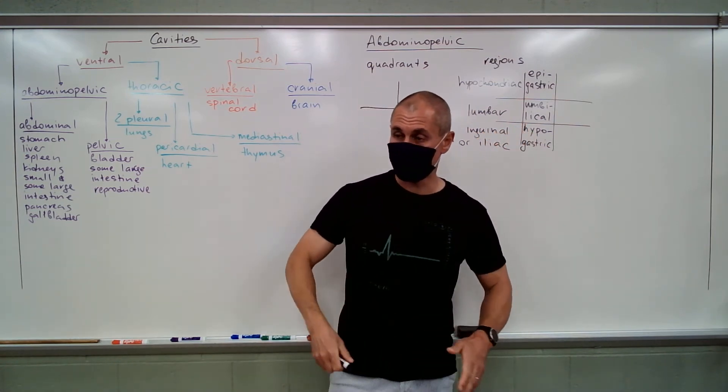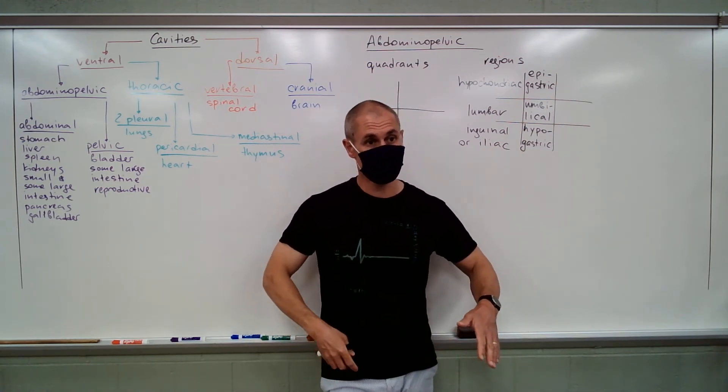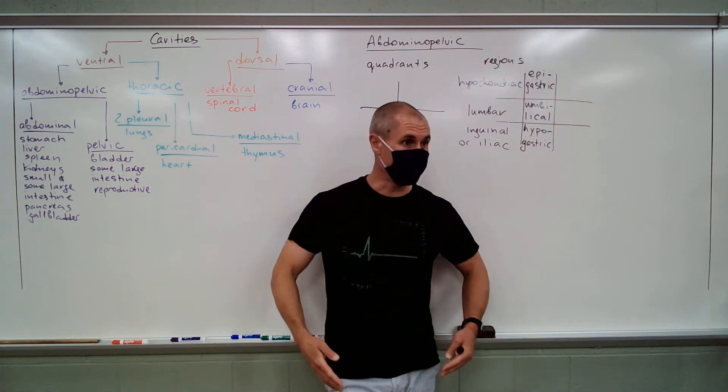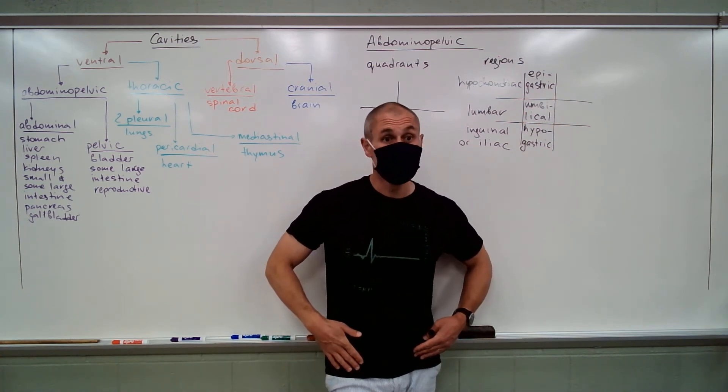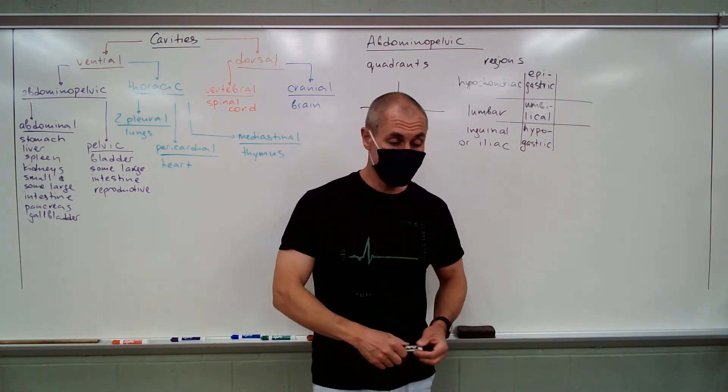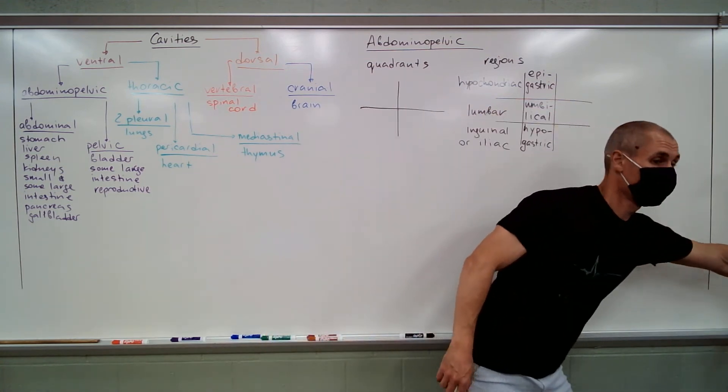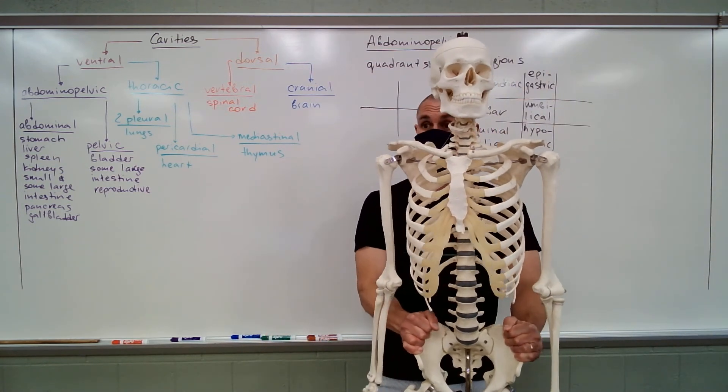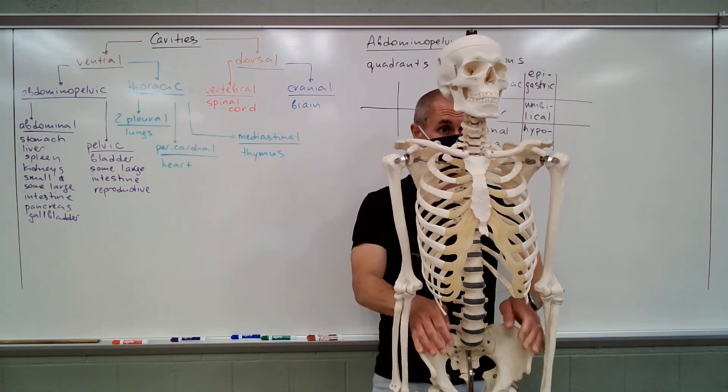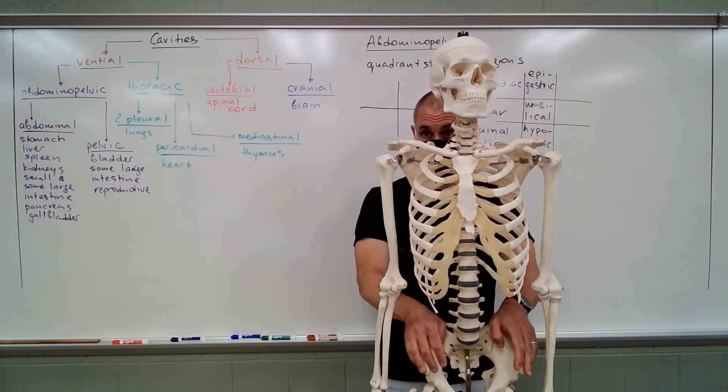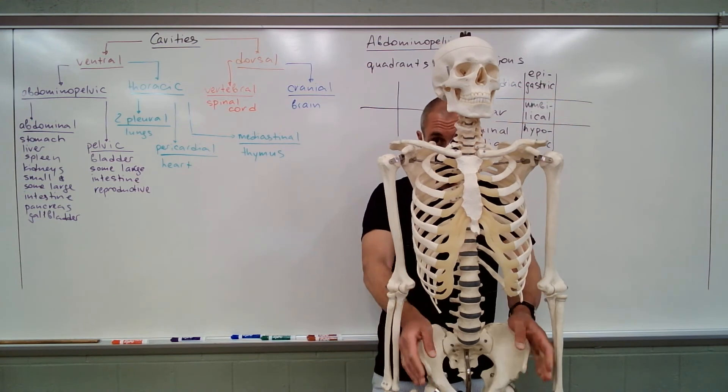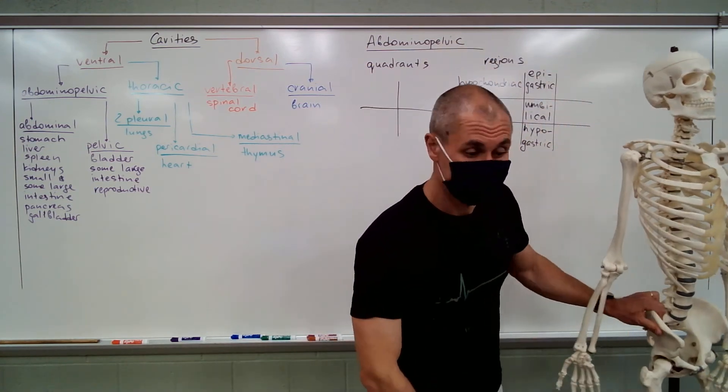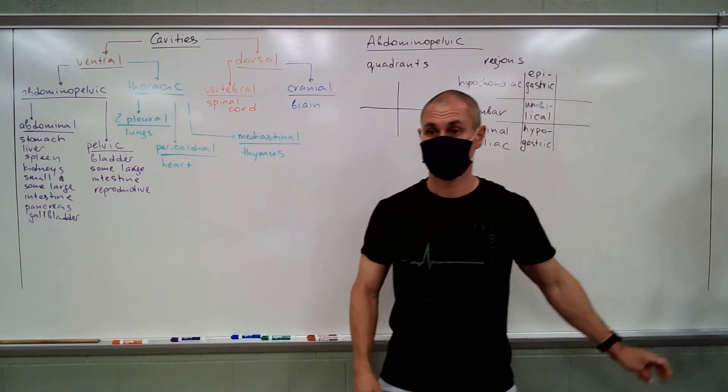And these two may have a couple of names. It can be inguinal or iliac. So, inguinal, because the inguinal region that is basically your groin is kind of closer. Iliac, because these parts here of the coxal bones, the hip bones, they're called ilium. So, they kind of in that area. Does that make sense?